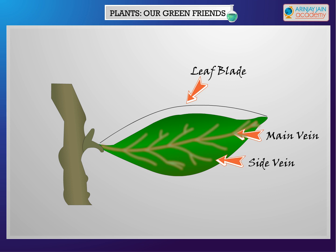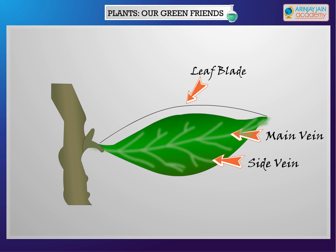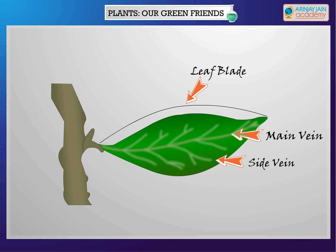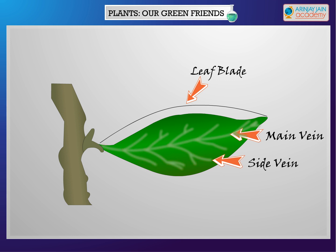Veins are like wrinkles or pipes running along the blade. Most leaves usually have a main vein and many side veins. These veins are involved in transport of substances.